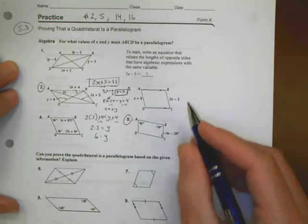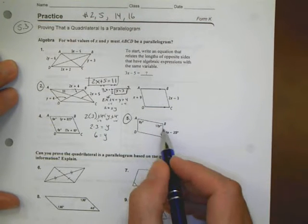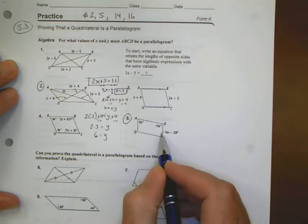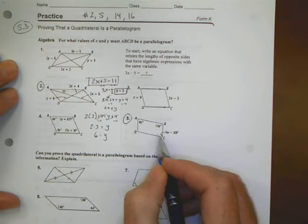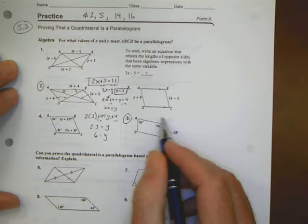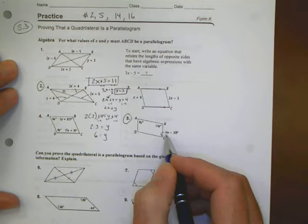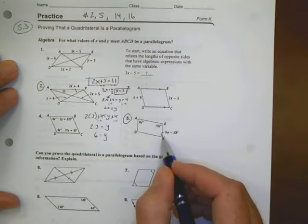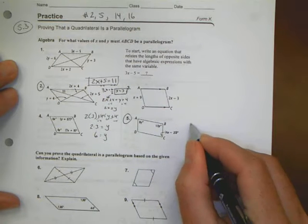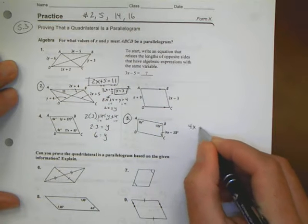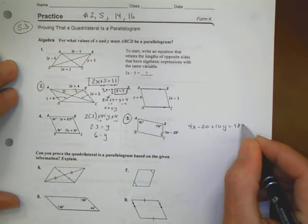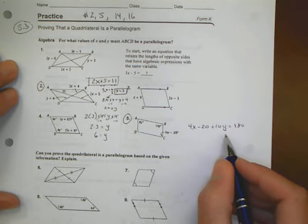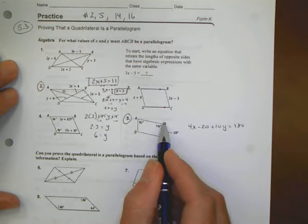When I look at number 5, I see I have a parallelogram. They're going to give me measurements of the inside angles. Remember from lesson 5.2, the angles that are across each other are going to add up to be 180 degrees. I have a couple options. I could look at these two angles and recognize that 4x minus 20 plus 10y is going to equal 180.